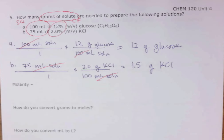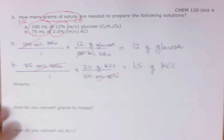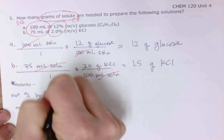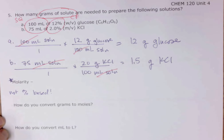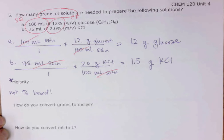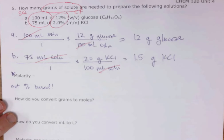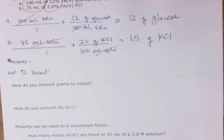That covers solutions and how to calculate mass/mass, volume/volume, and mass/volume percent concentration. We have one more concentration to discuss — molarity — which I'll cover in the next lecture. One important note: molarity is not percent-based, so it is not out of 100. Our percent concentrations — mass/mass, volume/volume, mass/volume — are all multiplied by 100. Study, do your practice problems, and email me if you have questions.